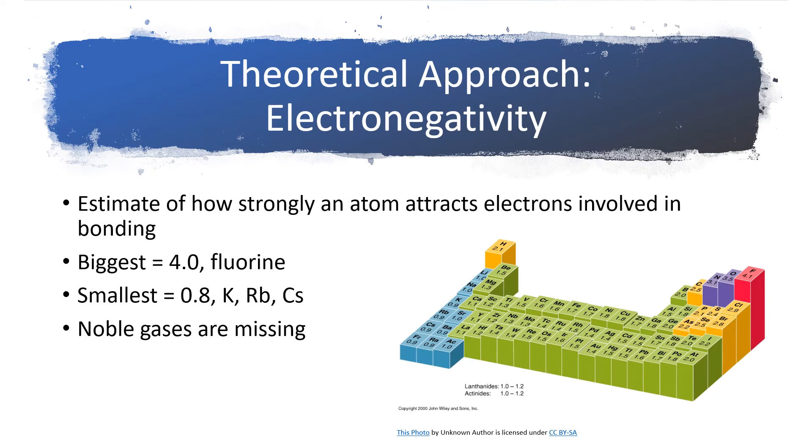Electronegativity is an estimate of how strongly an atom attracts electrons when it's involved in a bond. The biggest value is held by fluorine, which is about 4.0, although the graphic I found online uses a slightly different scale which puts fluorine at 4.1. The Pauling scale is the most common scale and caps electronegativity at 4.0. The smallest electronegativity is held by some of the alkali metals like potassium, cesium, and rubidium, with a value of about 0.8.